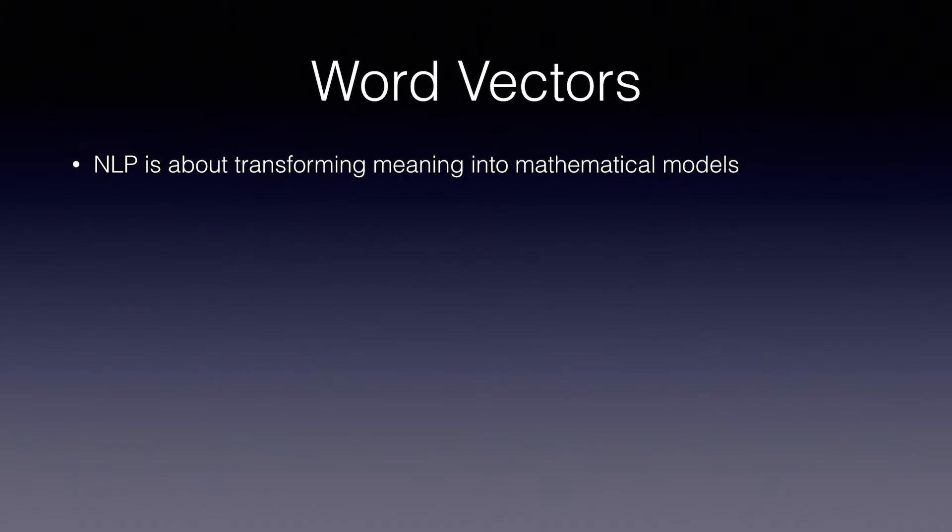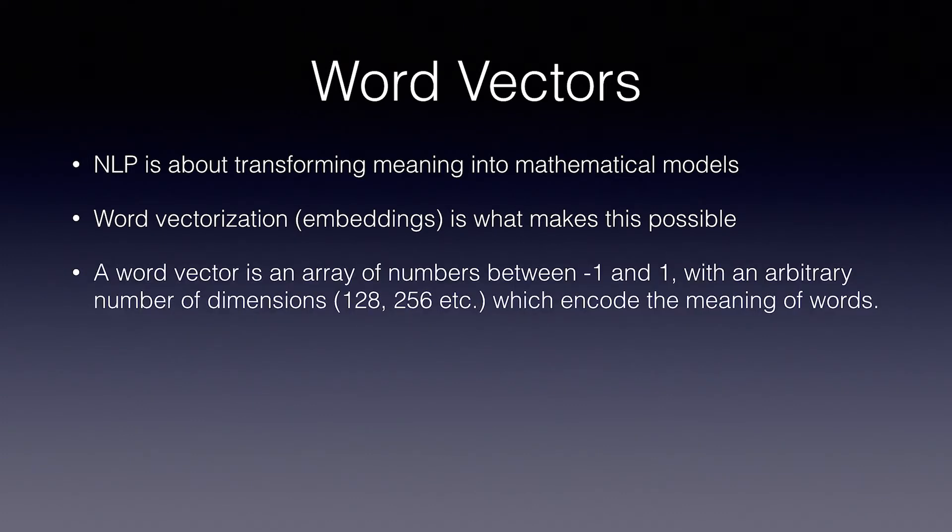Words in a vocabulary are given an integer index, generally in order of the most common occurrence. The model doesn't see the letters, just integer indexes. Word vectors, also called embeddings, is an array of numbers between negative 1 and 1 with an arbitrary number of dimensions such as 128, 256, 384, etc., which encode the meaning of the words.